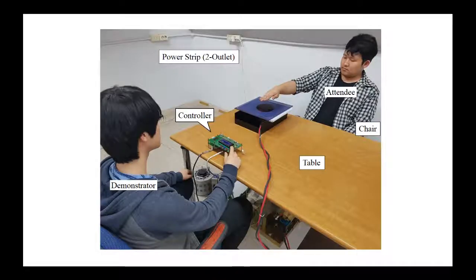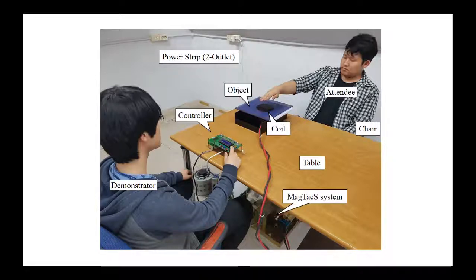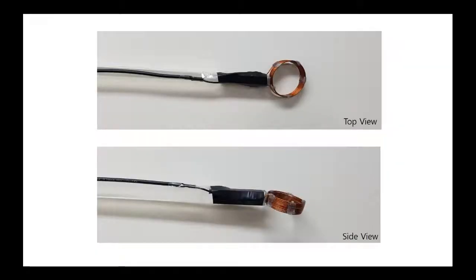This is our demonstration setup. The Megtech system is positioned under the table and the stimulation coil is placed between the coil stimulator and the hand. Participants do not need to wear or put on anything. This technology uses a time-varying magnetic field to elicit a tactile sensation, so we cannot see any mechanical movement of an actuator.